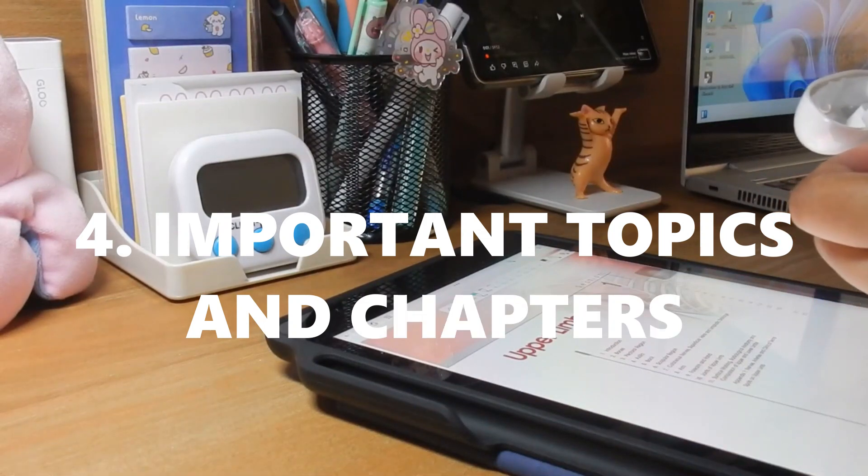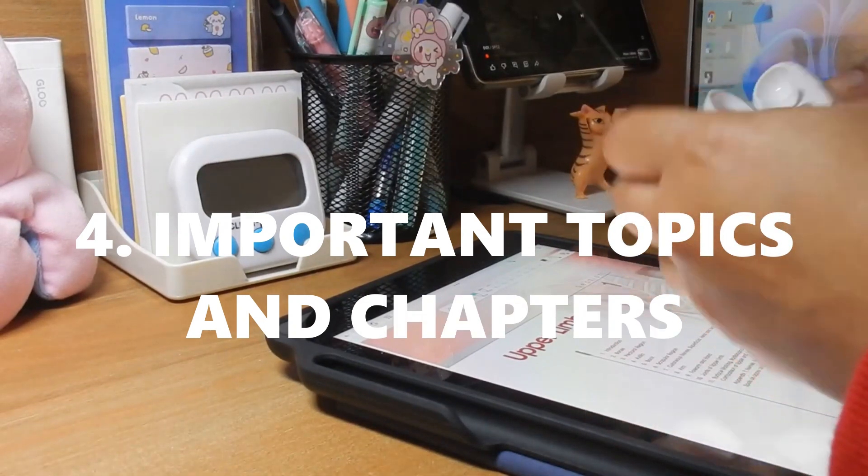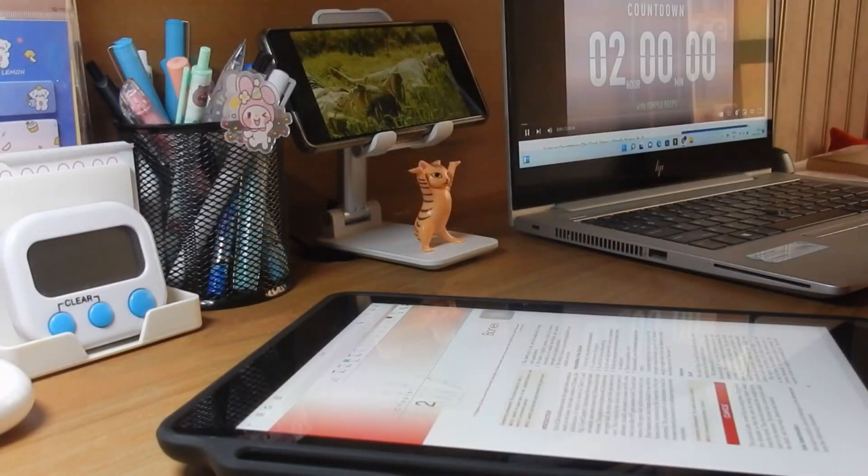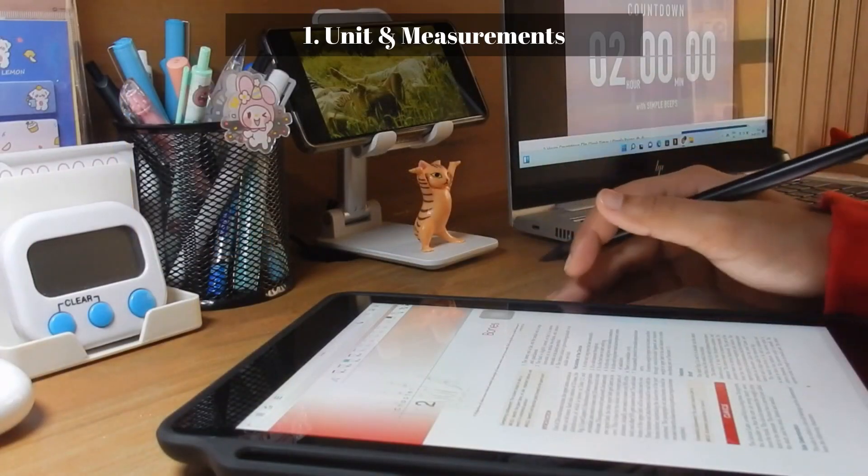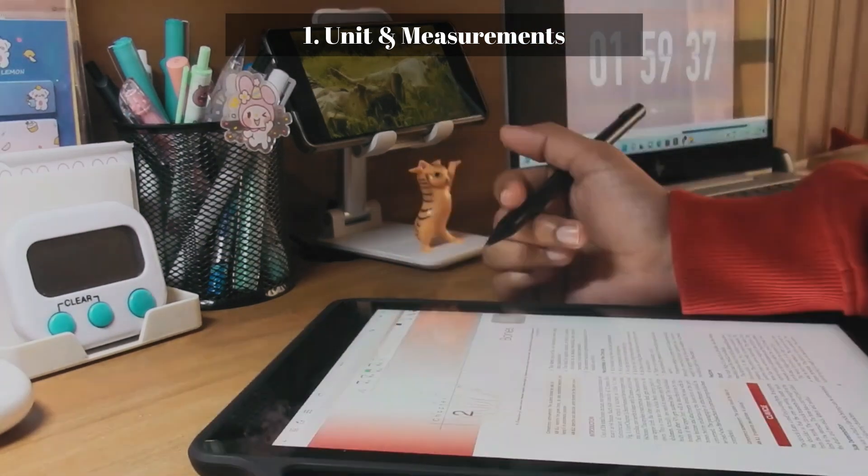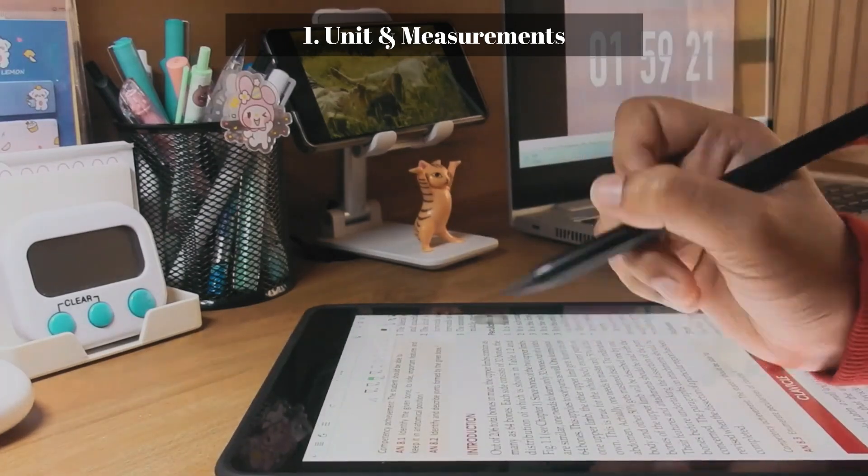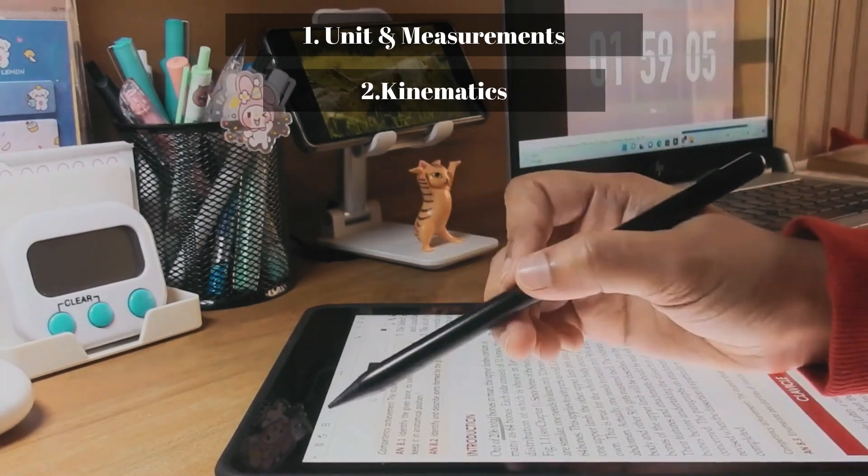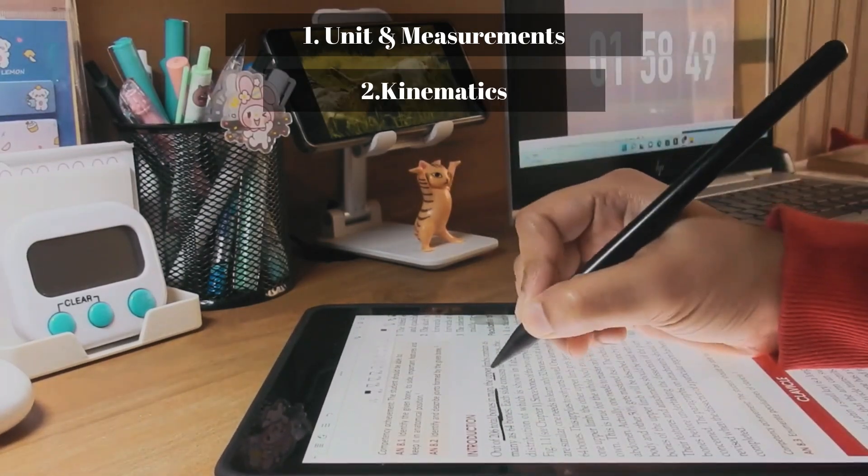Now the next thing is important topics and chapters. Well, almost every chapter is important, but there are few chapters which you should study with focus. These are most important topics like Units and Measurement - four questions were asked in 2020 and three questions in 2021 and 2022 from this chapter. Next is Kinematics - four questions in 2012 and 2013, and three questions in 2019, 2021 and 2022.